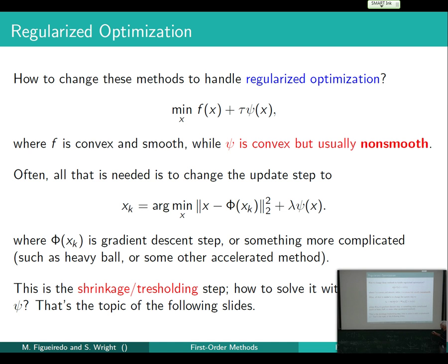From the current iterate XK, you do something just with F — this operator is based on XK and grad F of XK, and may include acceleration techniques. Then you plug it into this formula bringing in the regularizer, and what you get out is a new iterate XK+1. This is how you get from one iterate to the next in a regularized formulation.